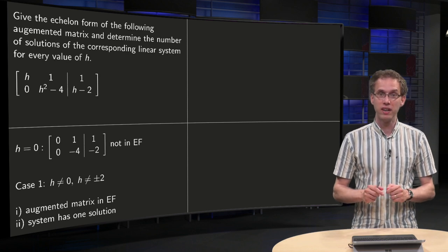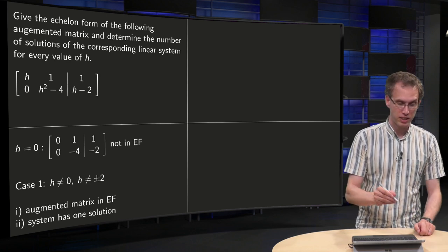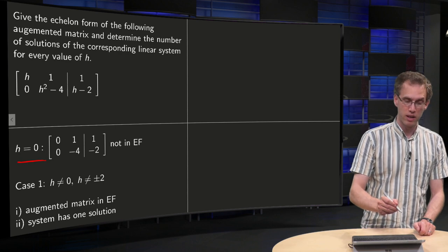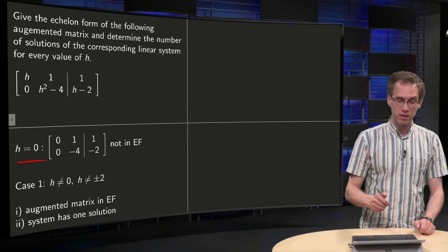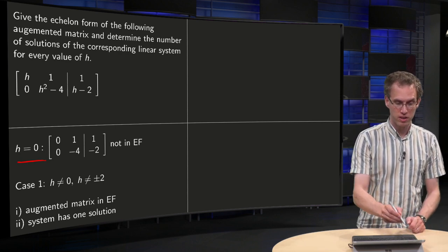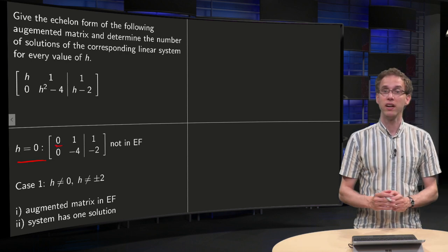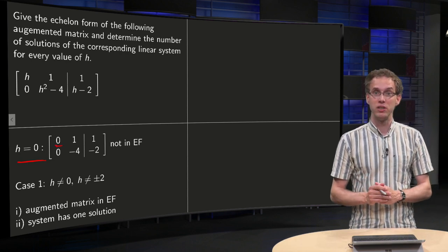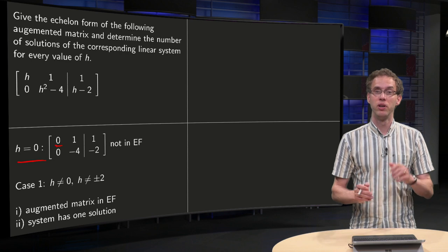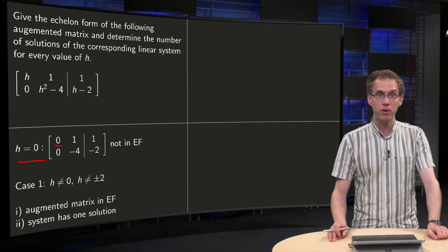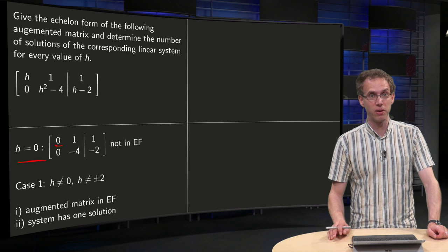But we have to be careful here, because if you plug in h equals zero, you see that we get a zero over here and our augmented matrix is not an echelon form anymore. So we already see that we have to be a bit careful for the h equals zero case.